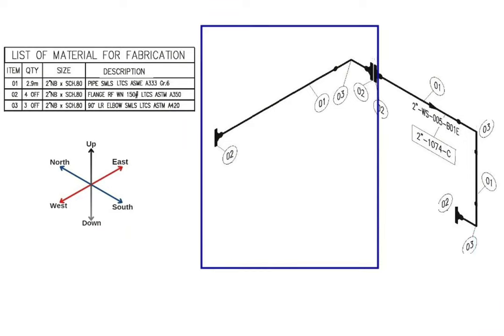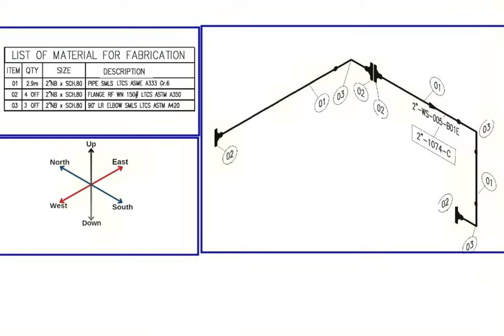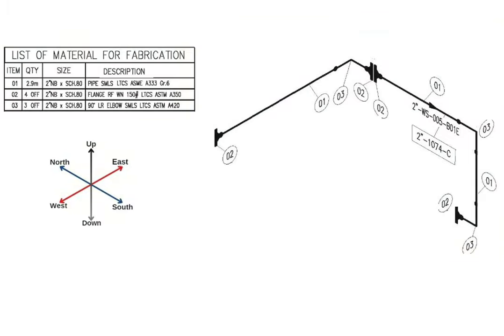In this picture we can see the pipe isometric drawing, the bill of materials used in this pipeline, and arrows for reading this piping isometric drawing. This drawing is of the 2-inch WS-005B-01E pipeline. This pipeline consists of two pipe spools: first and second spool.